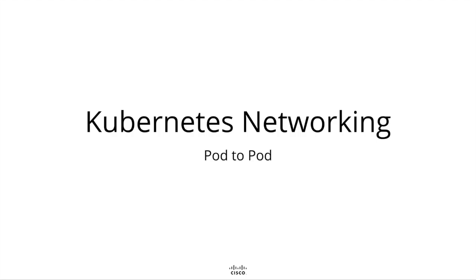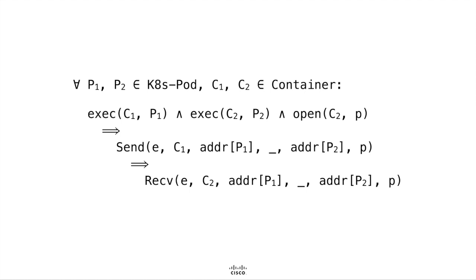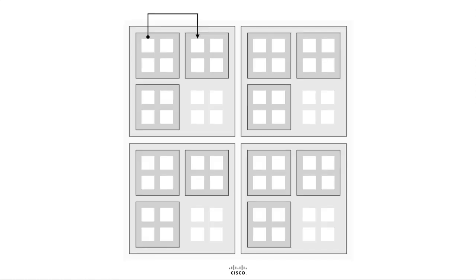Next, we will discuss pod-to-pod communication. A container C1 executing in the context of a pod P1 can communicate with any other container C2 executing in the context of any other pod P2 via the address of P2. Note that this requirement does not include the node P1 or P2 is hosted on — P1 could be hosted on the same or a different node as P2.